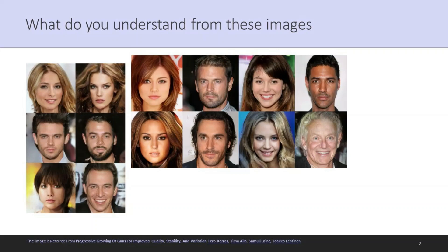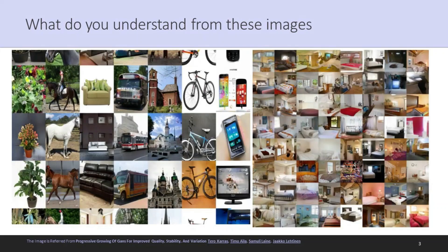How are these images? Do they look like your favorite celebrities? Or how do these collages look? Does it look like a nice bedroom design, or whatever random images you come across? What if I say all these images you have seen are photorealistic images generated by the generative adversarial network?